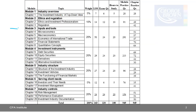We're starting Module 3, Inputs and Tools. Within Module 3, there are five chapters: Microeconomics, Macroeconomics, Economics of International Trade, Financial Statements, and Quantitative Concepts. Module 3 makes up 20% of the CFA Institute Investment Foundations Program, which translates into roughly 24 questions. There are 50 learning outcome statements in this module.